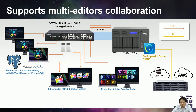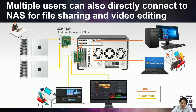QTS Hero is also suitable for post-production workflows requiring high performance and reliability — supporting more concurrent online editors and high resolutions from 4K to 8K. For small offices or SOHO teams, you don't even need a 10G switch; you can install multiple 10G adapters on your NAS and support multiple concurrent online editors directly. Some models like the ATS series can also support Thunderbolt expansion cards for Mac connections.